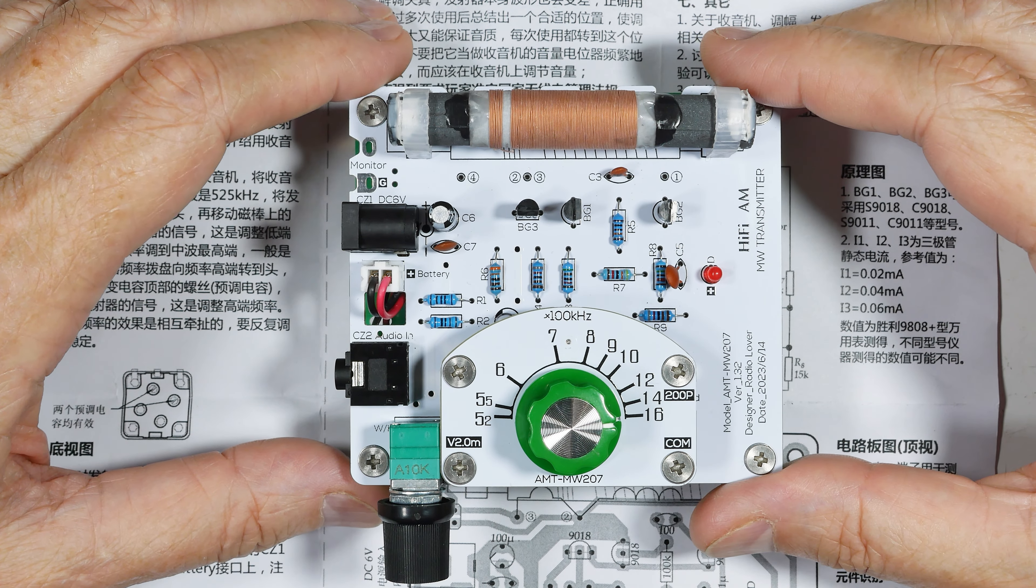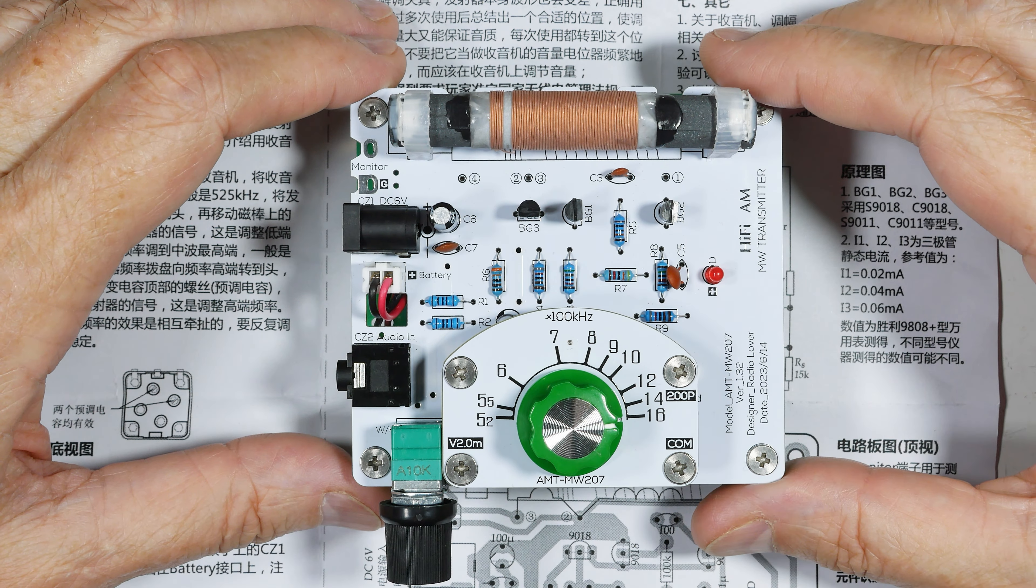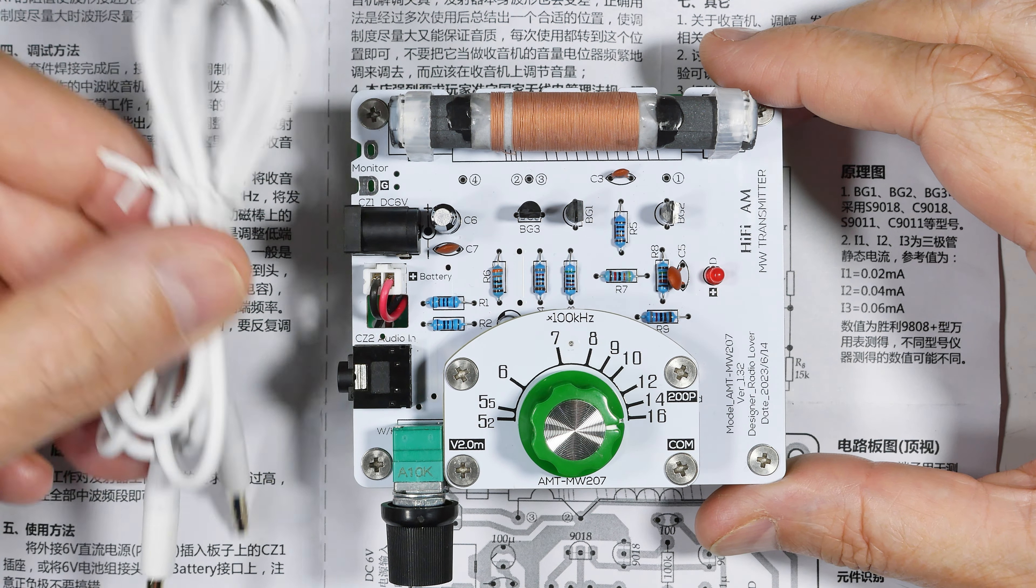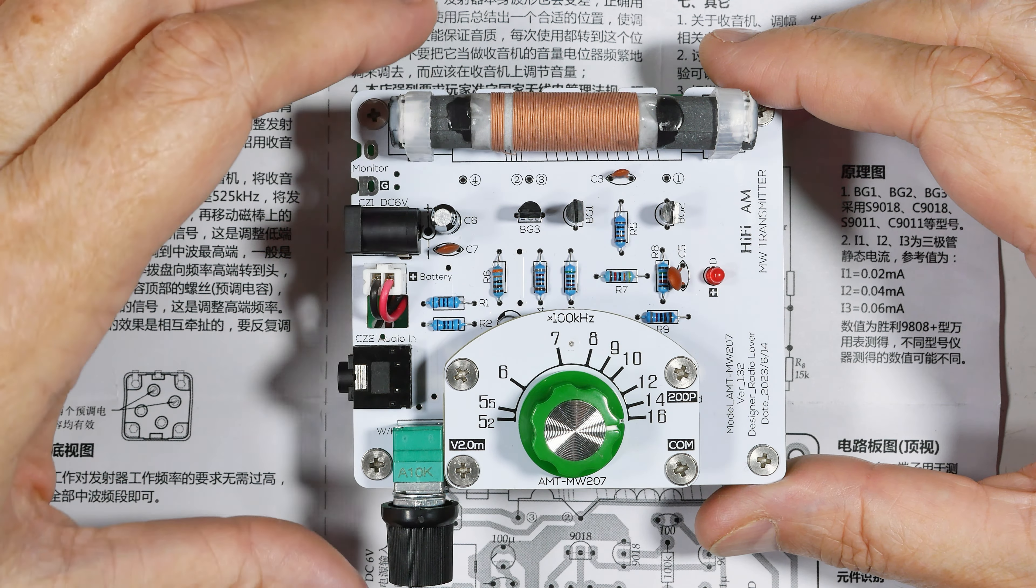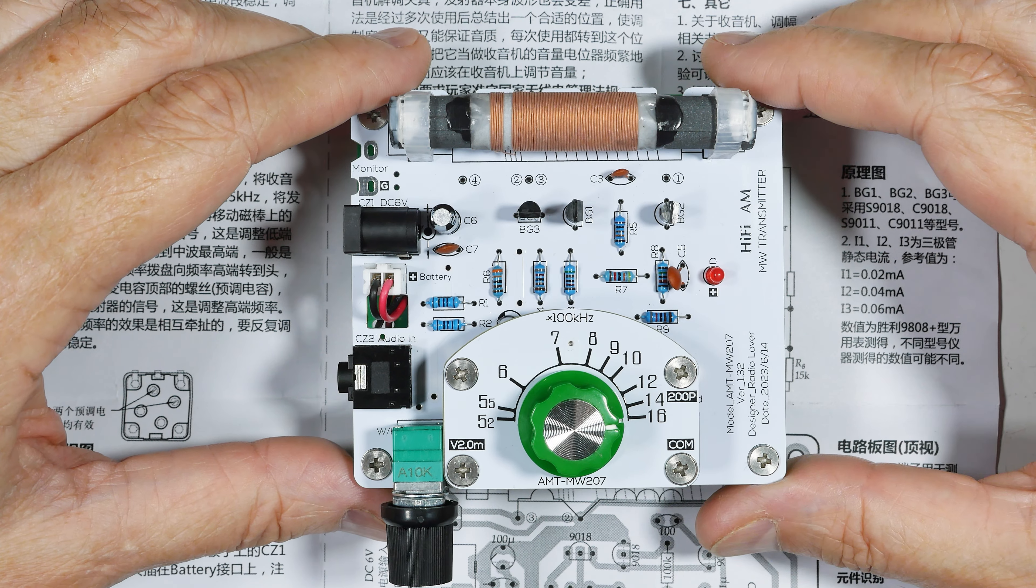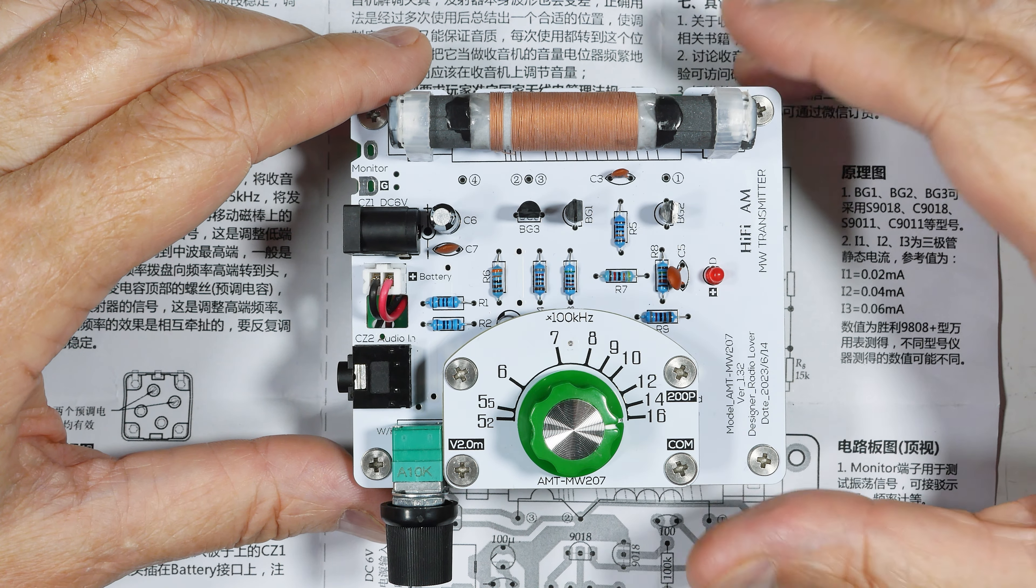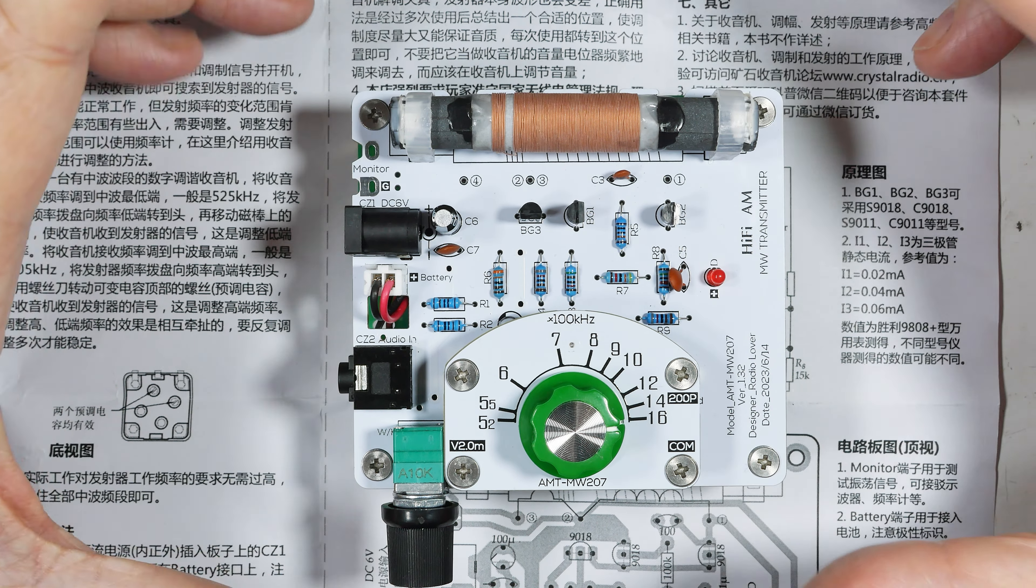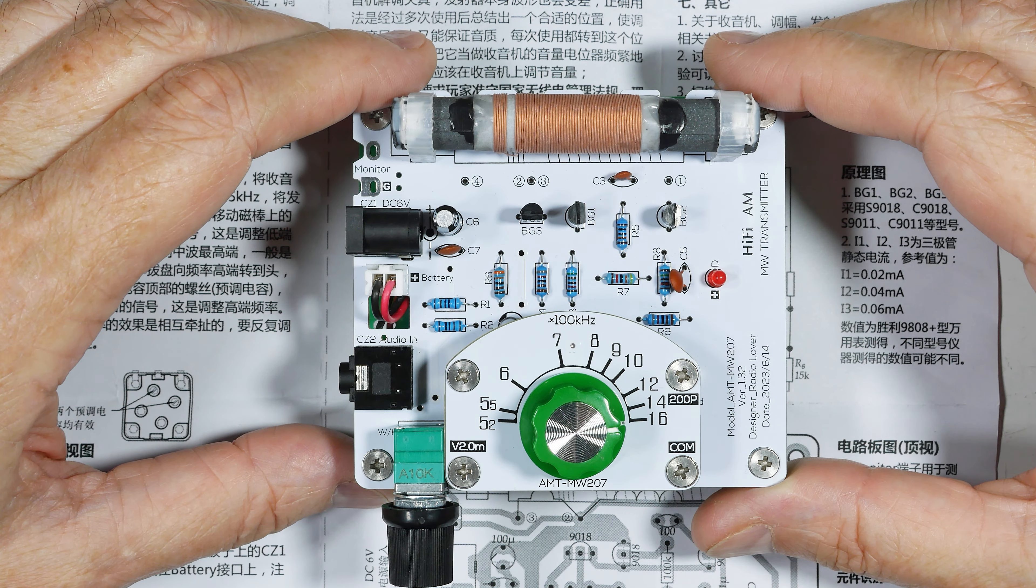So I thought I'd buy one of these little local AM transmitters. Then I could use a patch cord to play one of my own video recordings through the AM station, receive it on the crystal radio, and show how it was working.